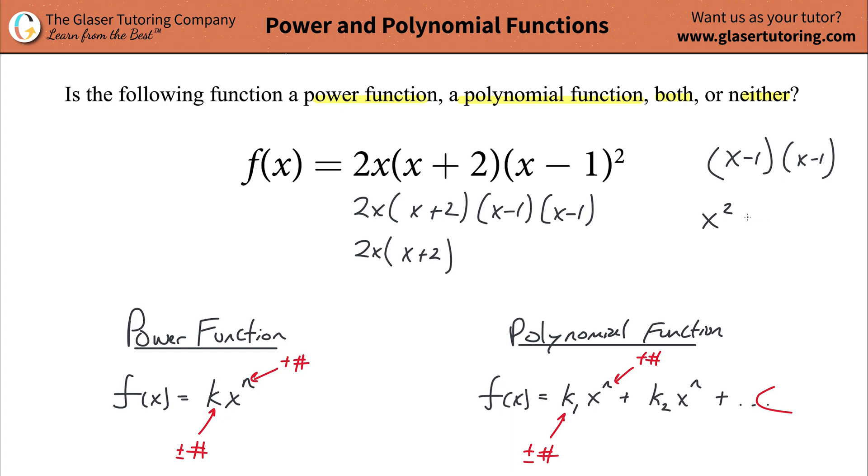Then you take the second term in the first one, multiply it by the second term, second term in the first, multiply it by the first term in the second. So that's also a negative x. And the negative 1 times negative 1, or the second in the first and the second in the second. Is it getting fun yet? That's going to be a positive 1.